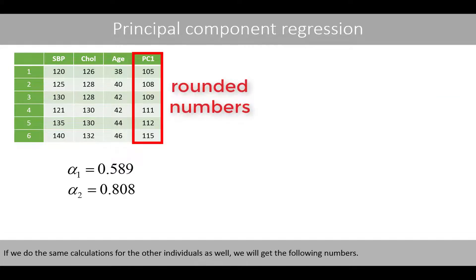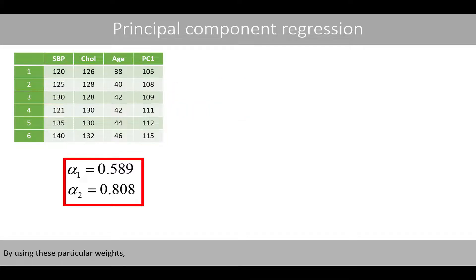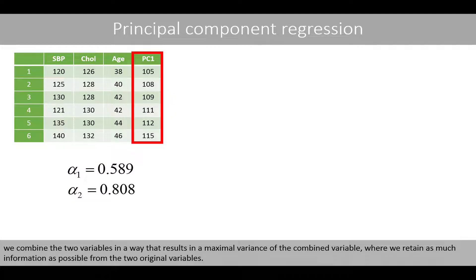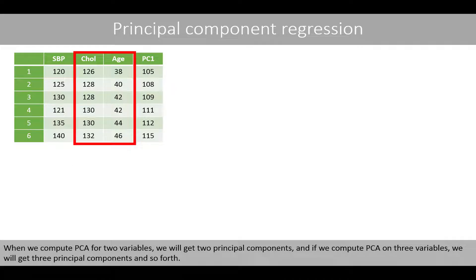Doing the same calculations for all individuals gives us PC1 scores for each. By using these particular weights, we combine the two variables in a way that results in maximal variance of the combined variable, retaining as much information as possible. When we compute PCA for two variables, we get two principal components; for three variables, three components, and so forth.